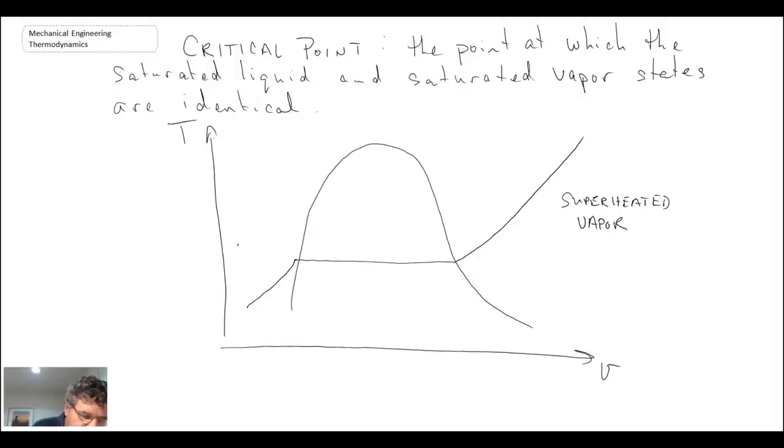Over here you're in the compressed liquid region to the left of your two-phase region. So you can have multiple lines coming through, each of them at their own specific P equals constant value. Now what happens, your critical point is up here. So this is your critical point.